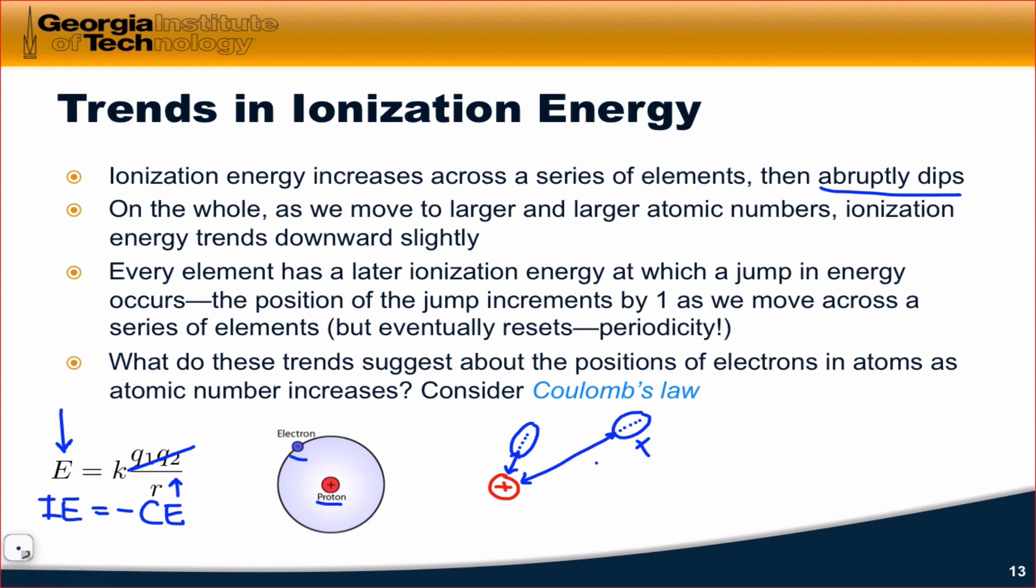These observations suggest a model of electrons within the atom in which electrons kind of bunch together in groups. And we're going to talk about that atom in detail in a couple of videos, and then in the next set of videos when we talk about the quantum mechanical nature of atoms.